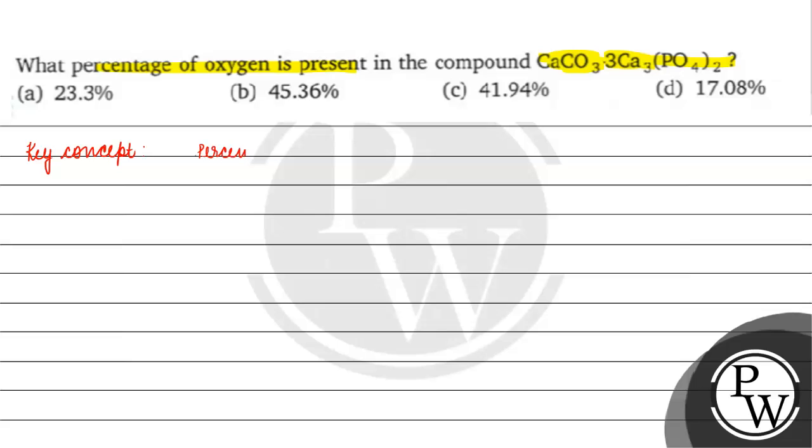remove percentage of an element in any compound, so what do we do? Basically write mass of the element in the compound by total mass of compound